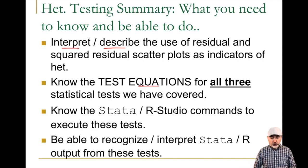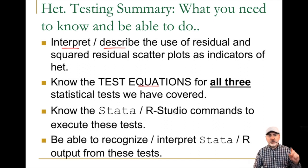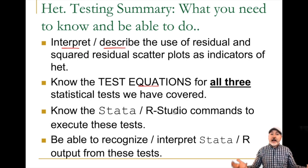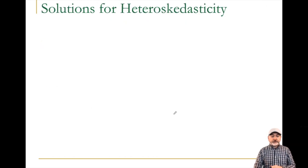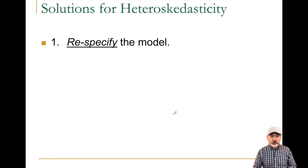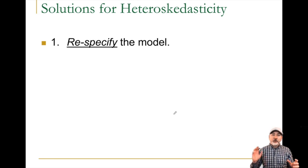This leaves us with just one issue unresolved: how do we fix the problem? How do we get results that are valid out of a regression model that contains a heteroscedastic error? We'll look at three possibilities.